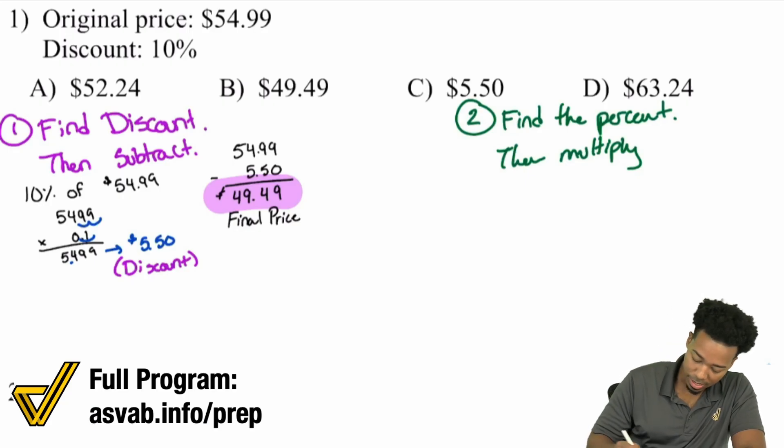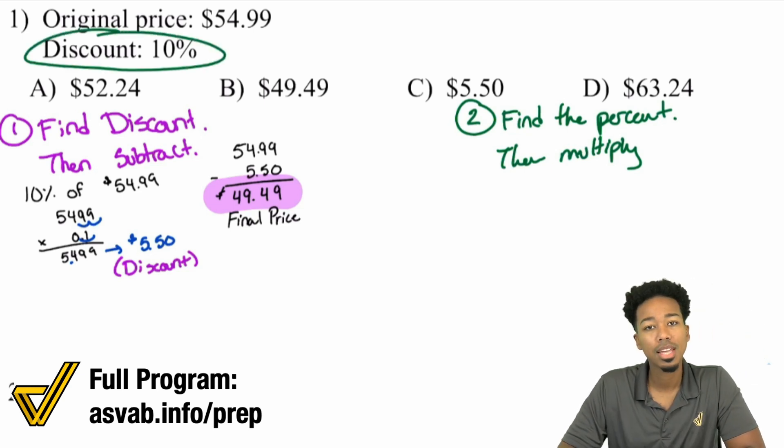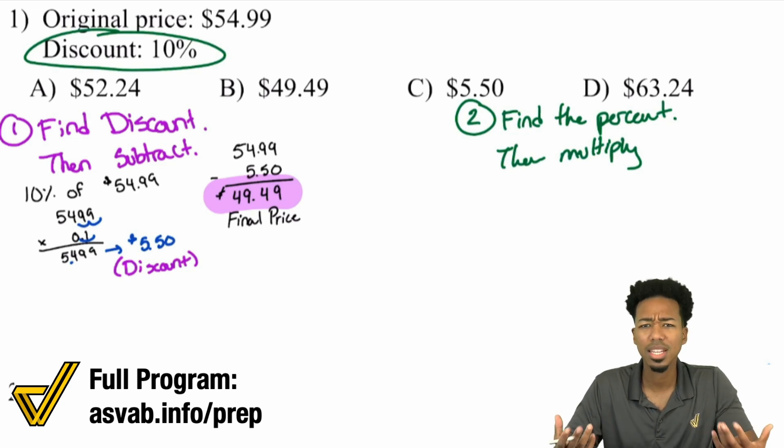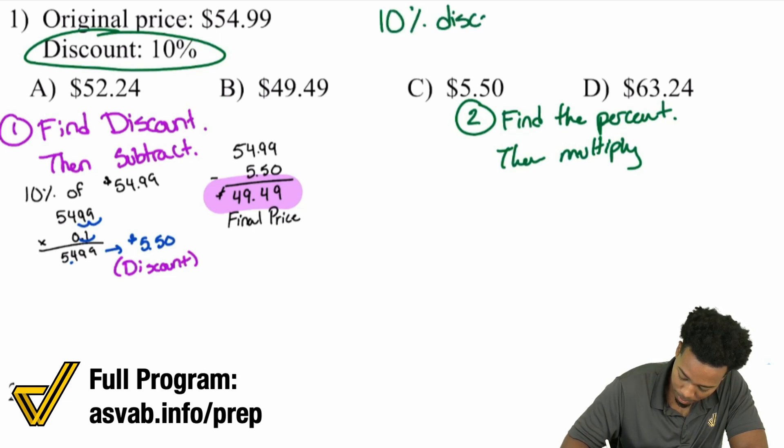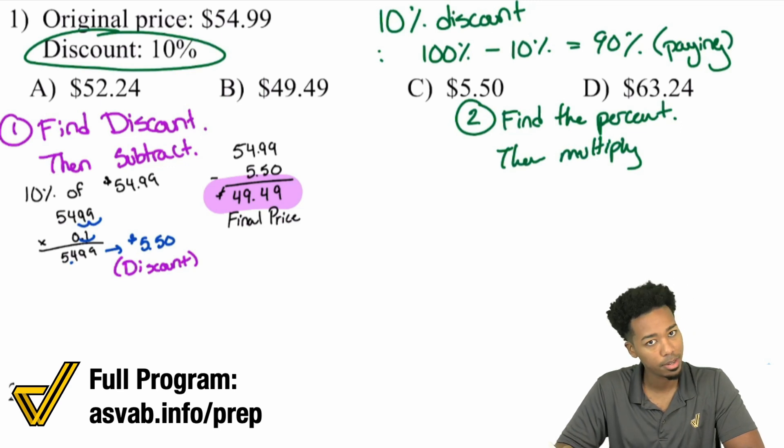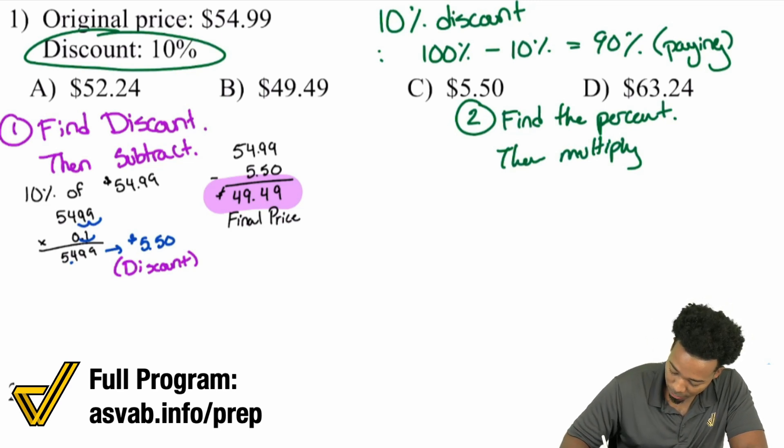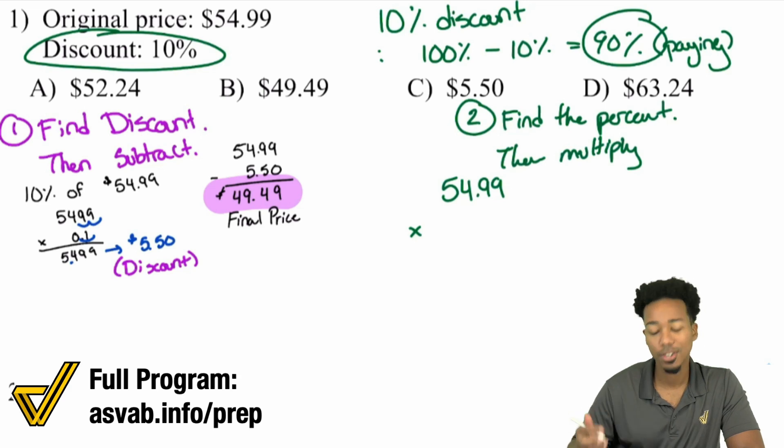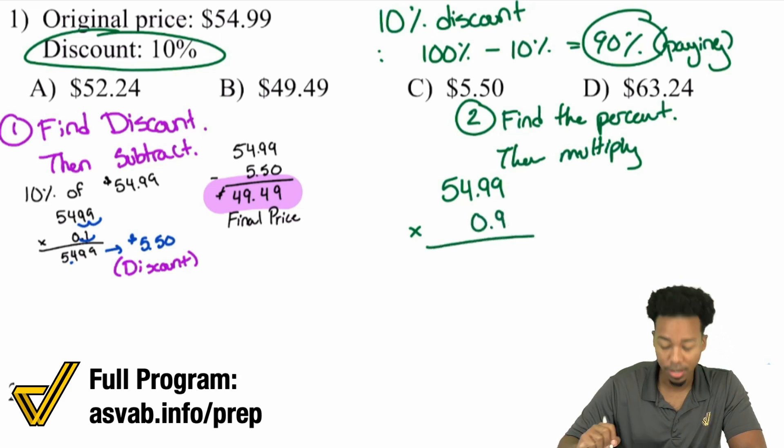If you're dealing with a 10% discount, you're discounting 10% from the whole thing. When it comes to percents, the whole thing is 100%. So a 10% discount means 100% minus 10% equals 90%. That's what you're paying - the final price is 90% of the original price. Your original price is $54.99, and you're multiplying that by 90%. To multiply by a percent, turn it into a decimal: 0.9.